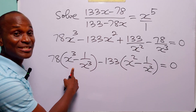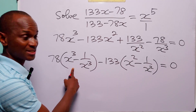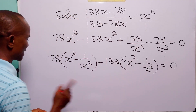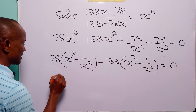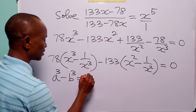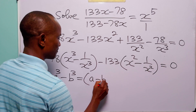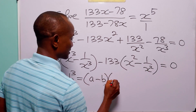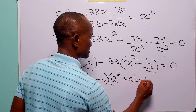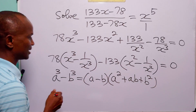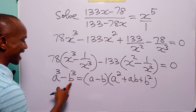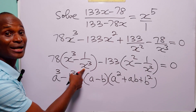Here you can see that we have the difference of 2 cubes, while here we have the difference of 2 squares. Remember that a cubed minus b cubed is equal to a minus b multiplied by a squared plus ab plus b squared. In this case, a is equal to x and b is equal to 1 over x.